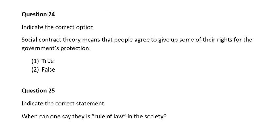Question twenty-four. Indicate the correct option. Social contract theory means that people agree to give up some of their rights for the government's protection. The correct answer is number one.